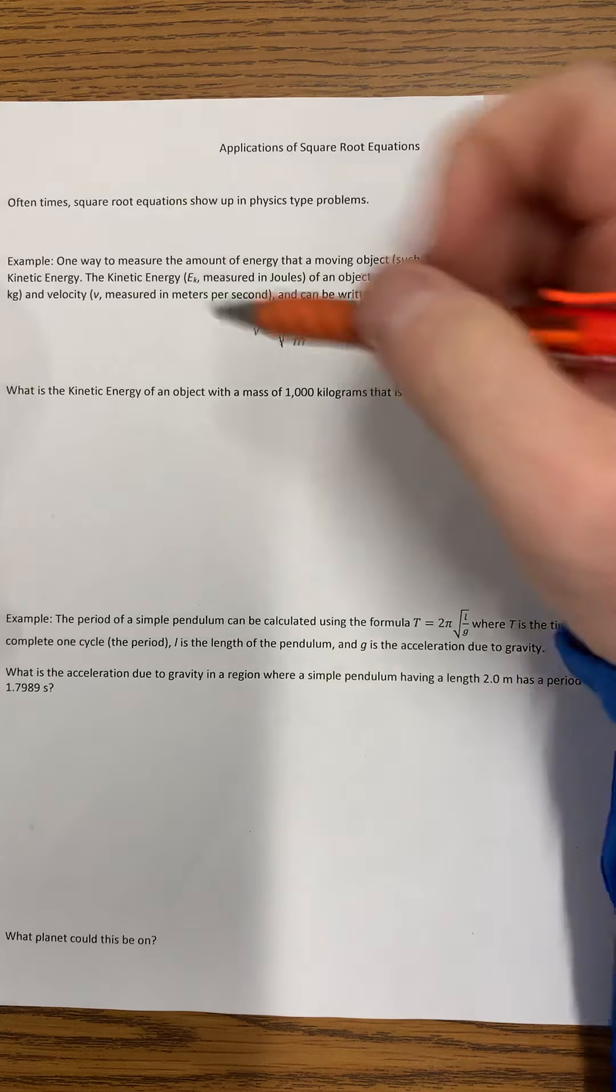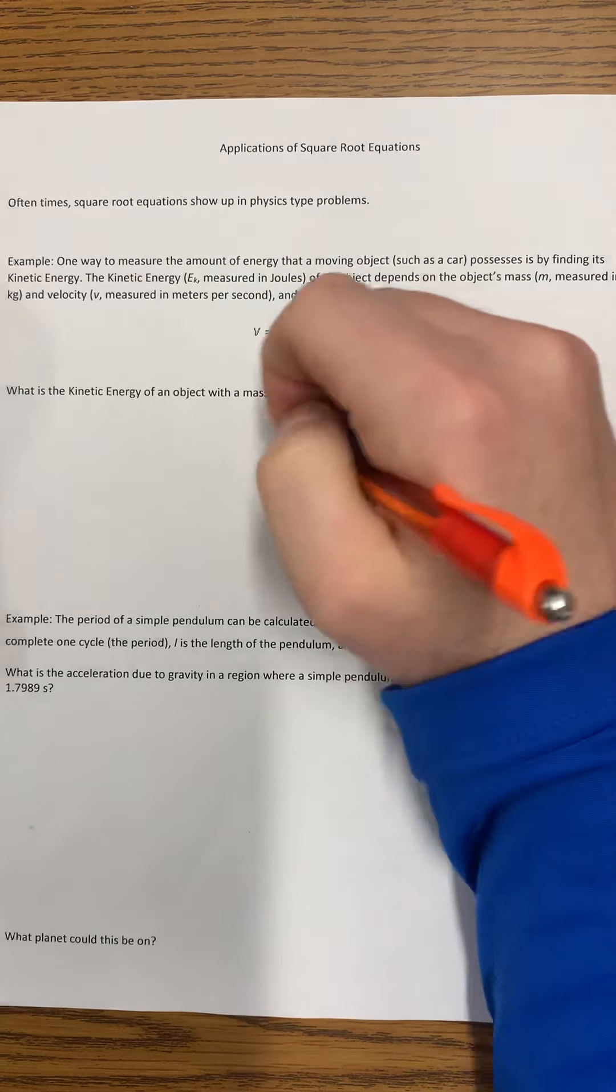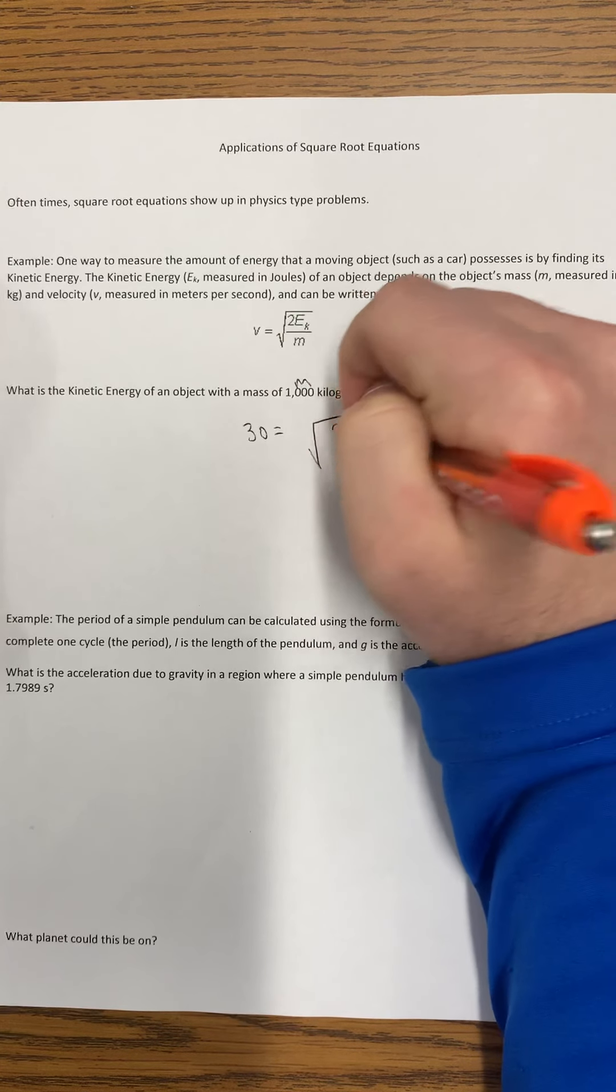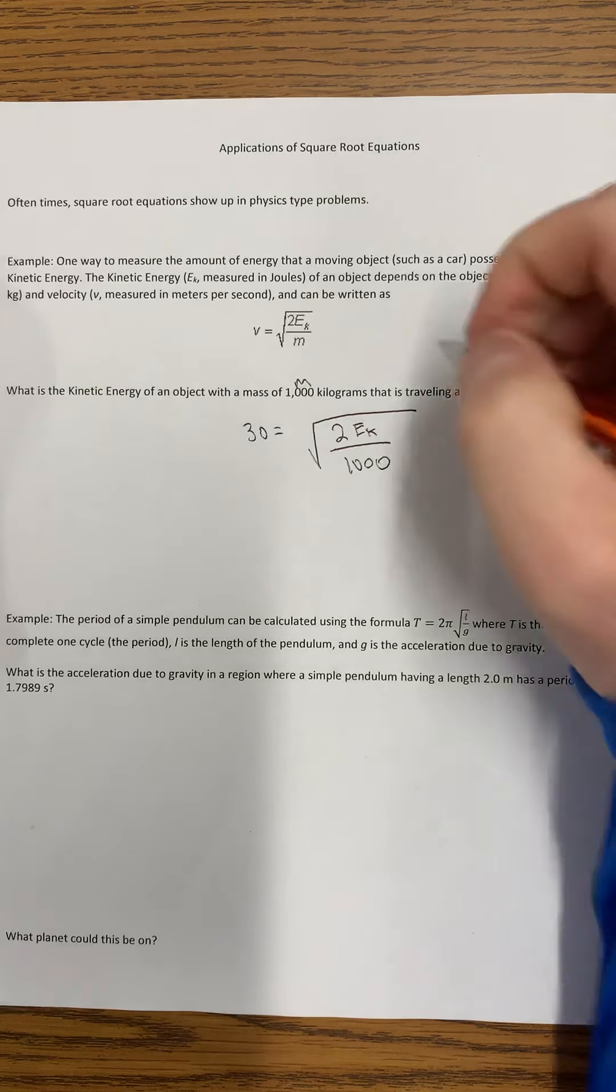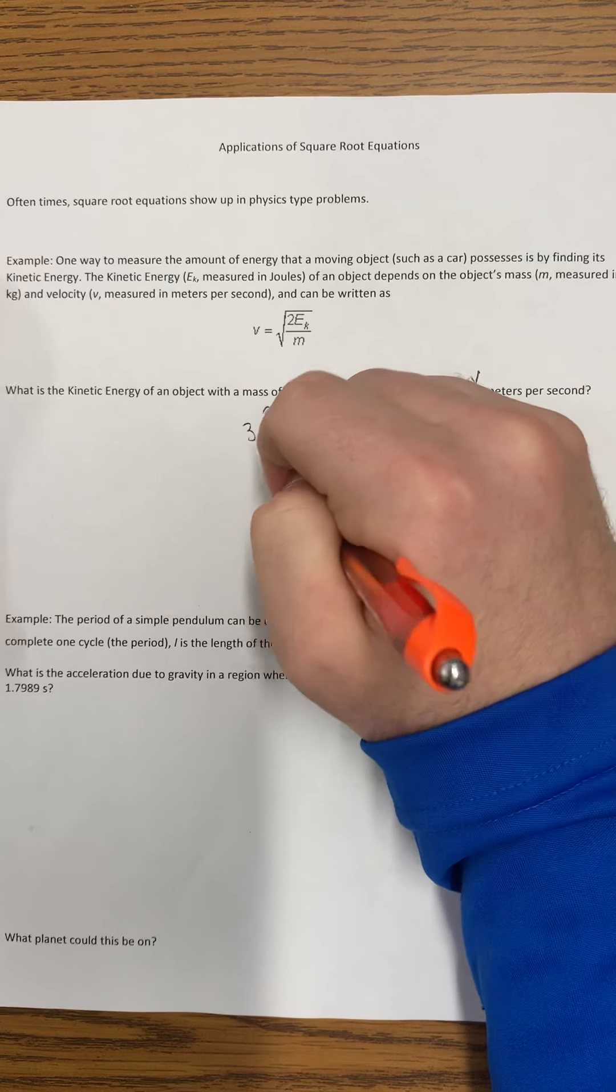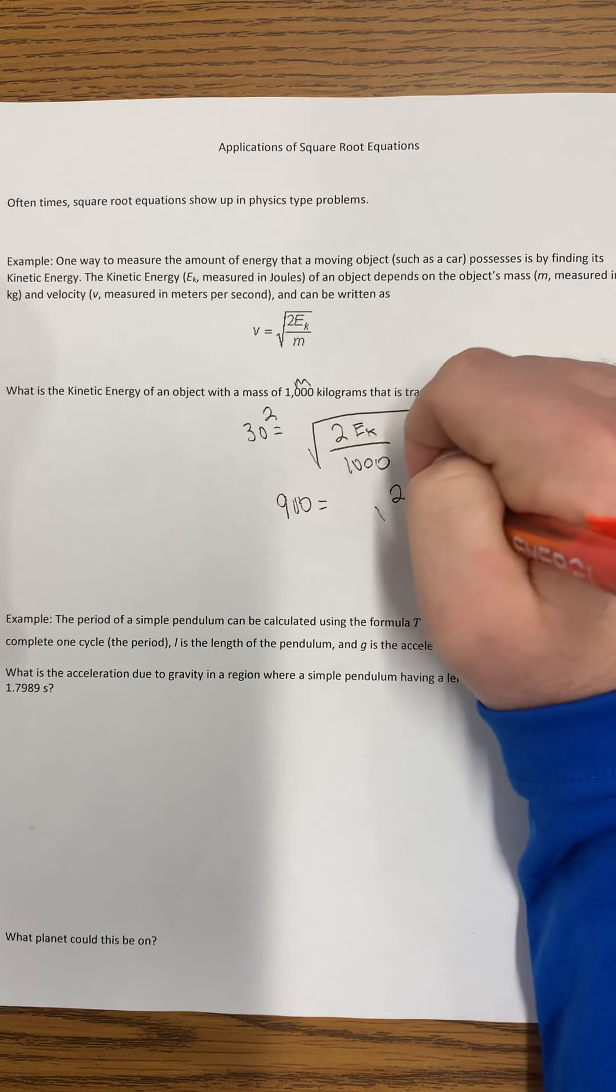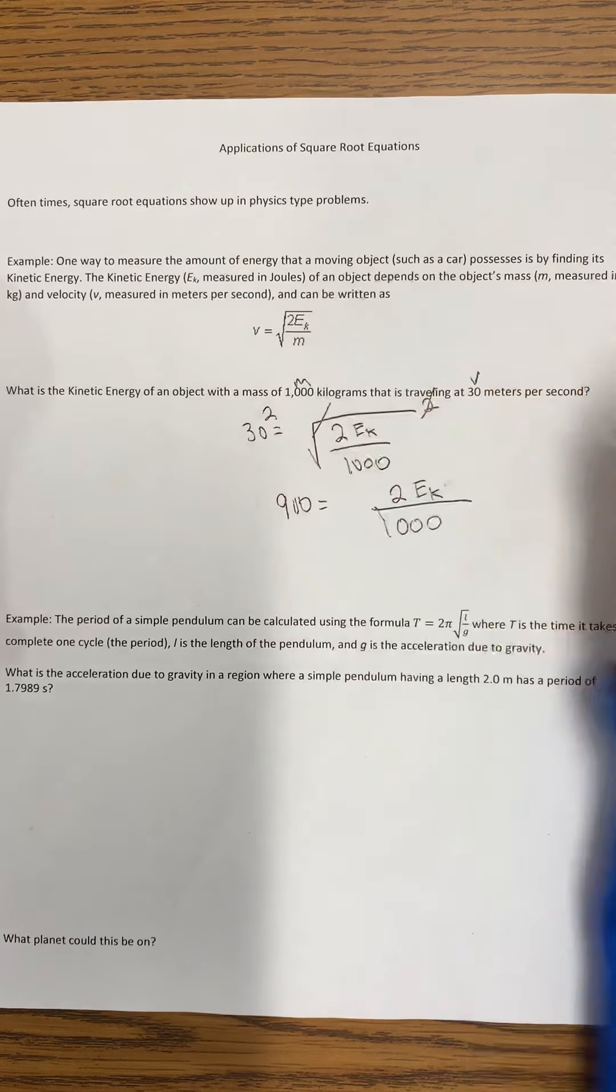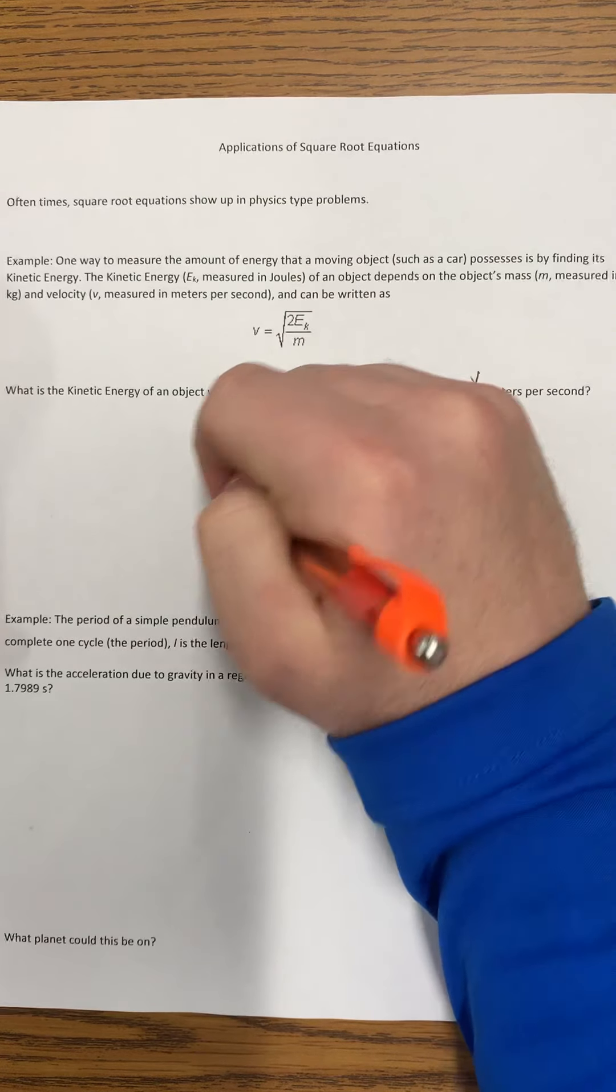So we're going to plug these into where they go. The mass, m, is 1,000. The velocity is 30. So 30 equals the square root of 2 times the kinetic energy divided by the mass, which is 1,000. We solve this equation by squaring both sides. 30 squared is 900, equals 2 E sub k all over 1,000. The square and the square root cancel each other out. We can multiply both sides of the equation by 1,000.